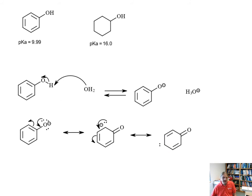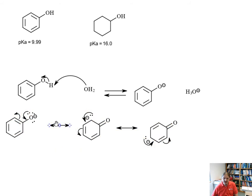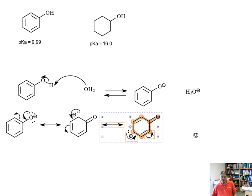These can be delocalized into the aromatic ring, and we can continue to draw resonance contributors further delocalizing the charge around the ring. And it's this resonance delocalization that's important for understanding why phenol is much more acidic than other alcohols.